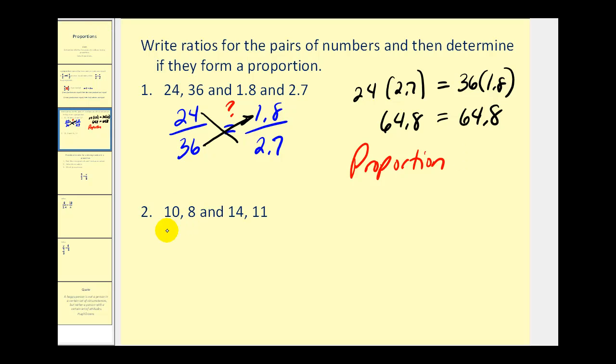For number two, the first ratio would be 10 to 8, and the second ratio would be 14 to 11. And we want to know if this would form a proportion. And we can determine this by finding the cross products and seeing if they're equal. So 10 times 11 must equal 8 times 14 if we have a proportion.